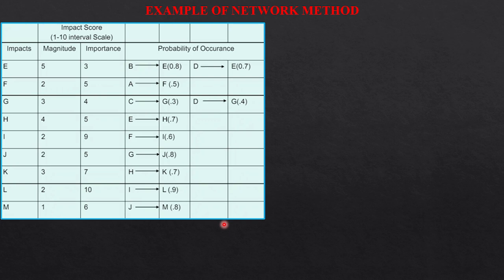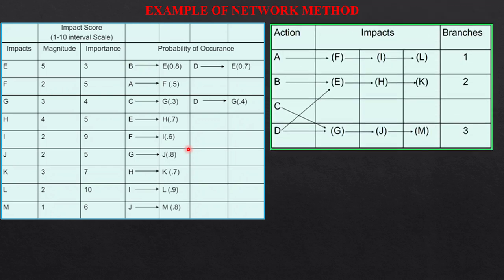Now, if we assign magnitude and importance in a scale of 1 to 10 against impacts E to M. We have assigned magnitude value and the importance and the probability of these impacts against the activity.